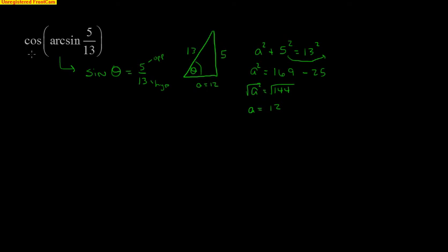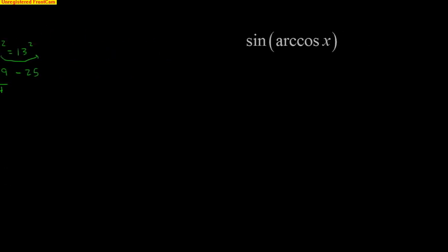Going back to the outside, we look at the cosine of that angle. Cosine is adjacent over hypotenuse, so our final answer is 12 over 13. Hopefully those two examples help — now let's look at one more that's a little trickier.